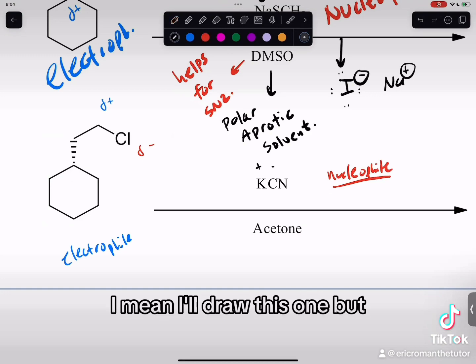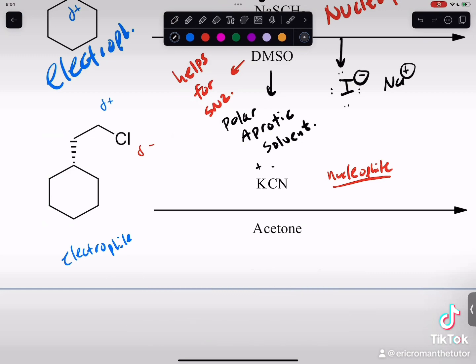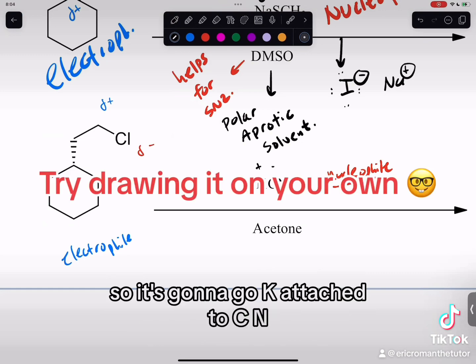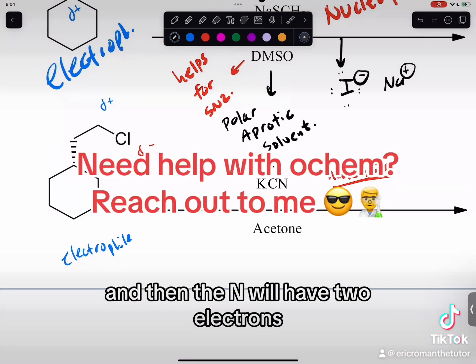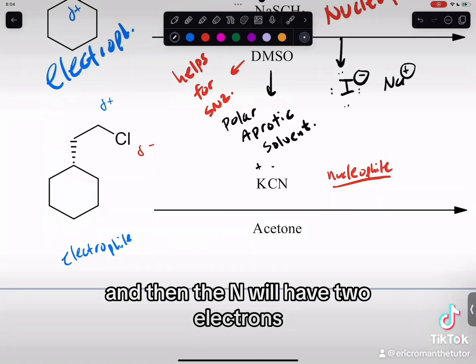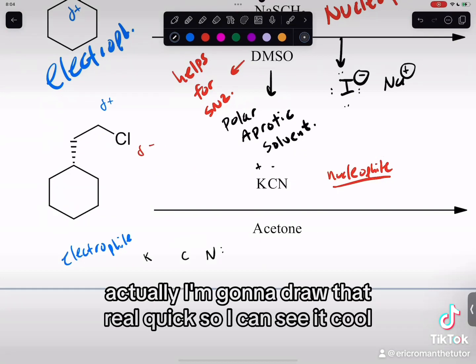I mean I'll draw this one, but can you try and describe to me what the Lewis structure might look like for KCN? Oh yeah, okay. So it's gonna go K attached to CN, and then the N will have two electrons, so one lone pair on the N. And then wait, actually, I'm gonna draw it out real quick so I can see it.